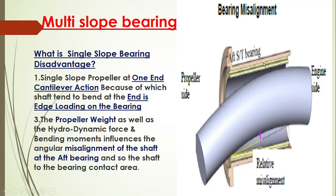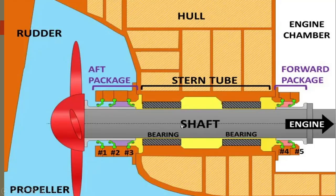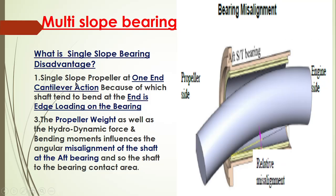This is the aft stern tube bearing. This is the propeller shaft — this is the engine side and this is the propeller side. Now the single-slope propeller at one end has a cantilever action. What is cantilever? It means one end is suspended by a huge weight — that huge weight is the propeller weight — because of which the shaft tends to bend, causing edge loading of the bearing.